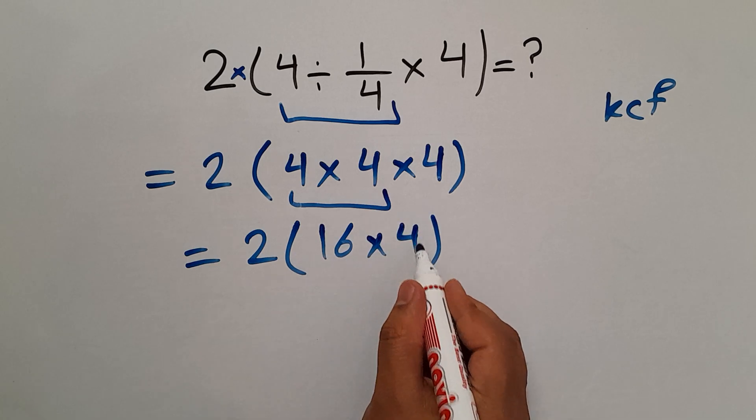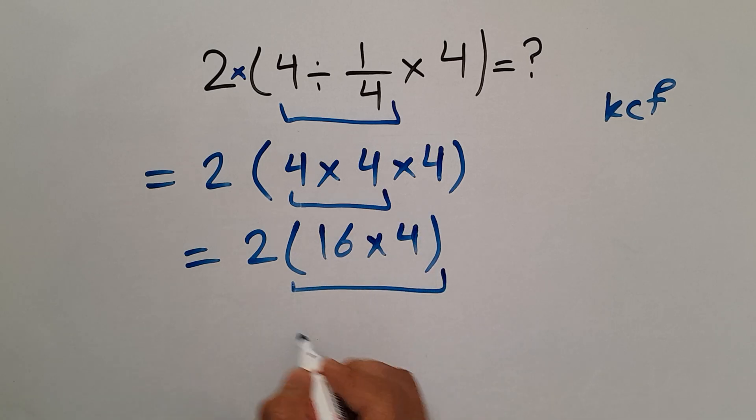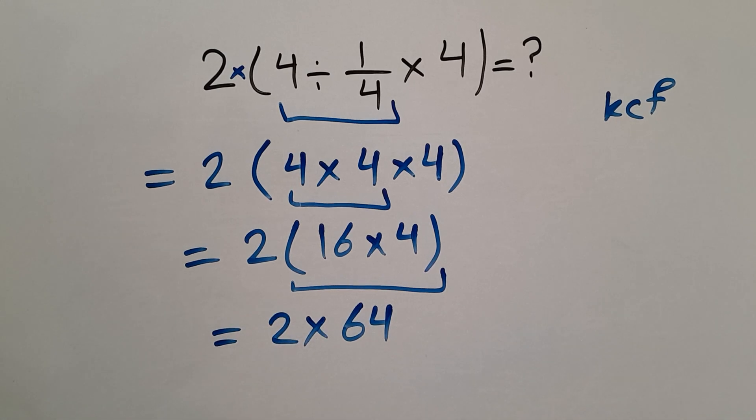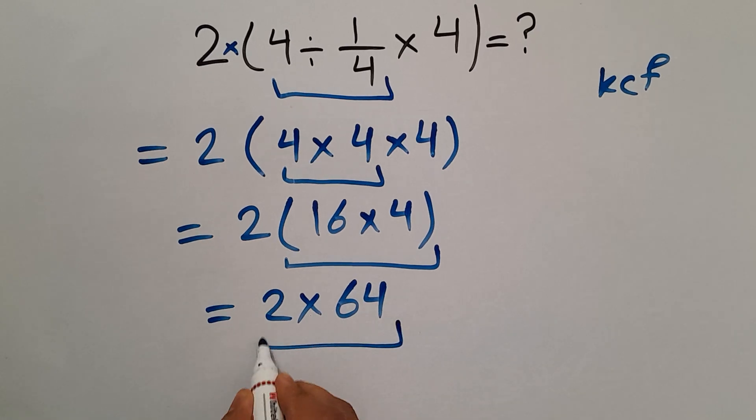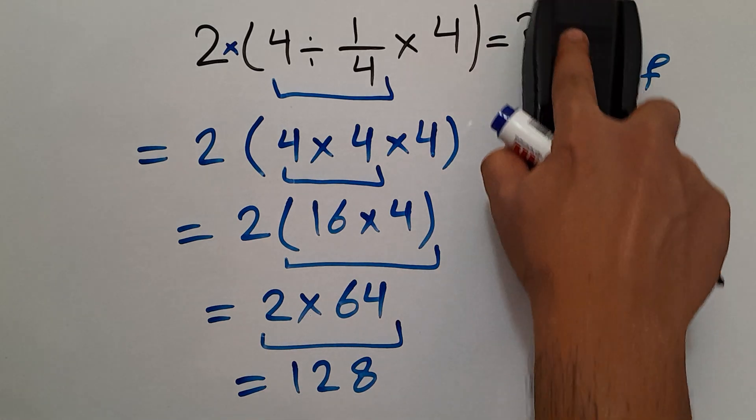And 16 times 4 equals 64. So 2 times 64. So 2 times 64 which equals 128. So our final answer to this problem is just 128.